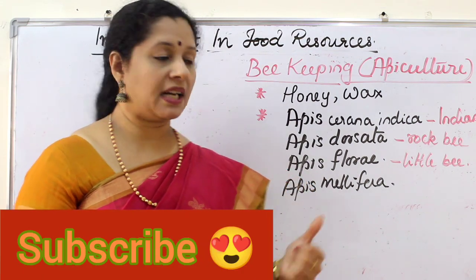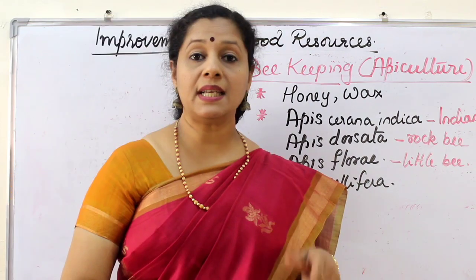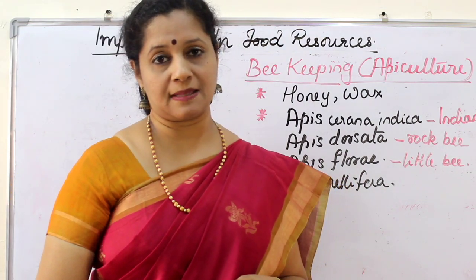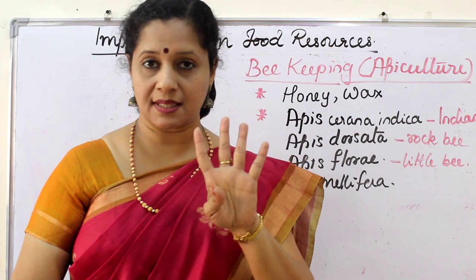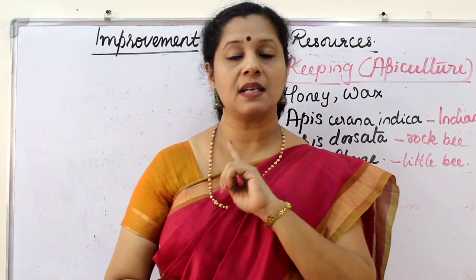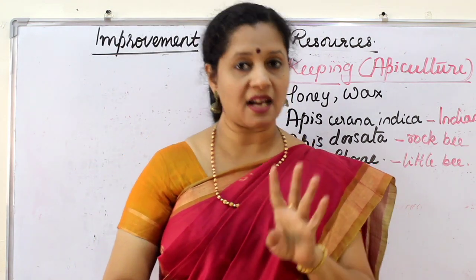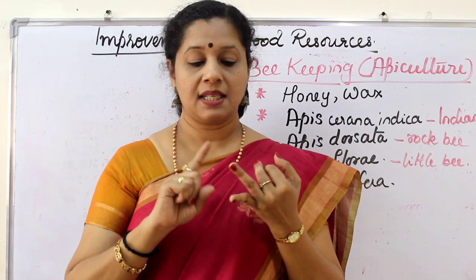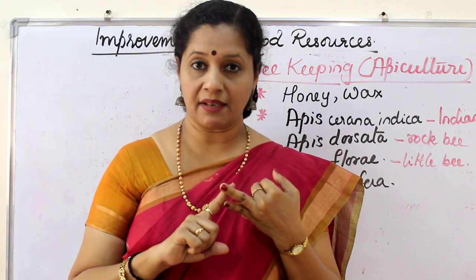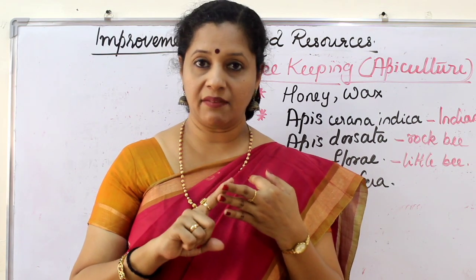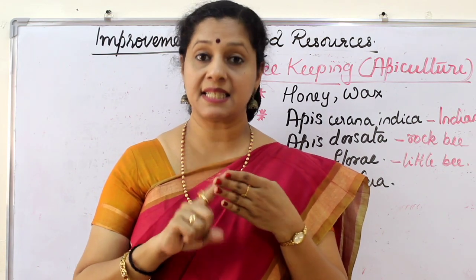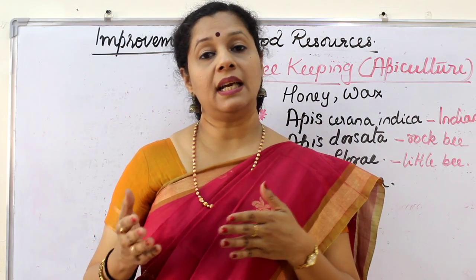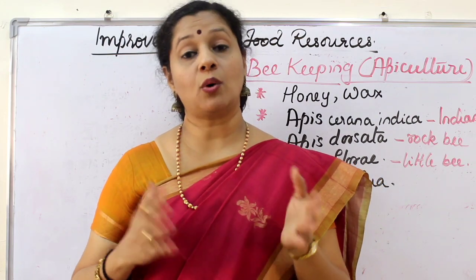The Italian variety is Apis mellifera. There are four reasons why Apis mellifera is preferred over Indian species — important for a 2-mark question: high honey collection capacity, they stay in a beehive for a long period of time, they breed very well, and they sting somewhat less.